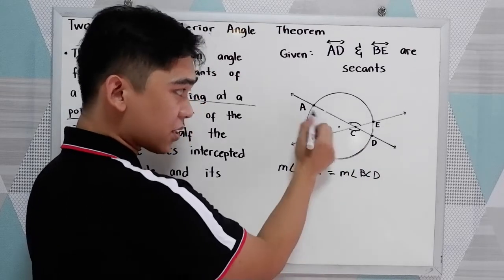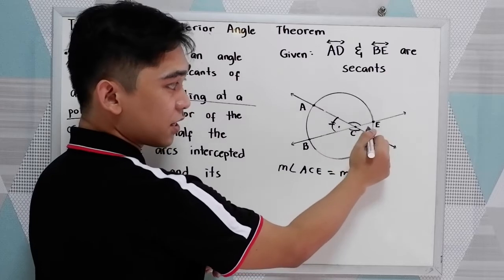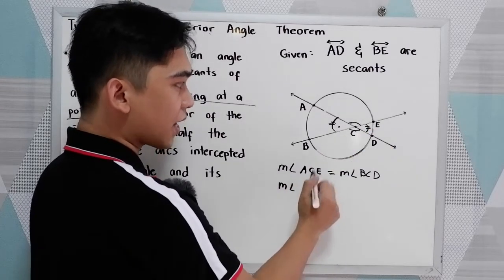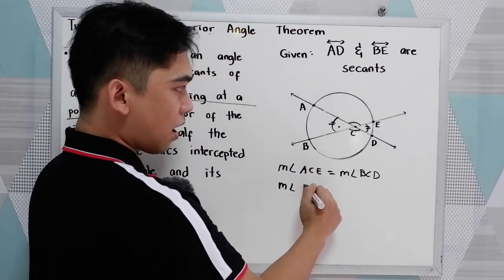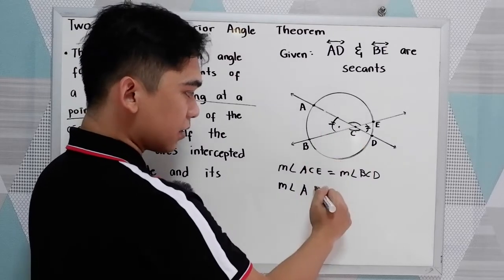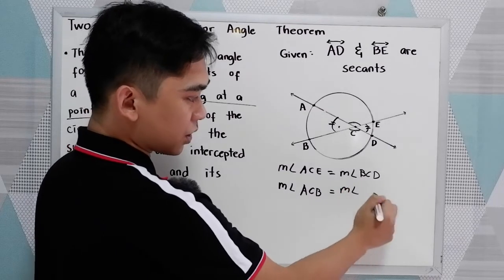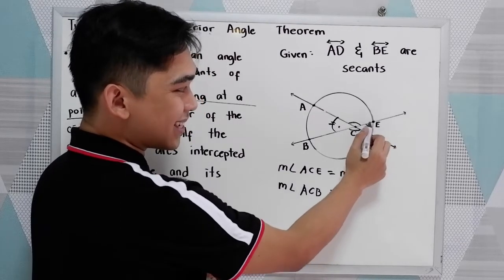And of course, this angle is equal to this angle, by vertical angles. The measure of angle ACB is equal to the measure of angle ECD.